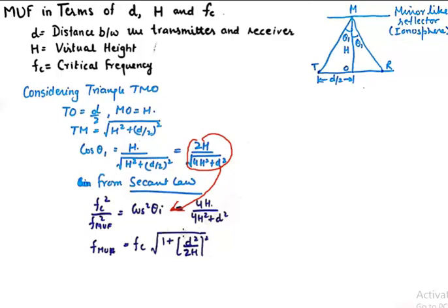This expression is the final expression which relates your maximum usable frequency to critical frequency, your skip distance, and your virtual height. Very important expression: the maximum usable frequency expressed in terms of d, H, and FC.